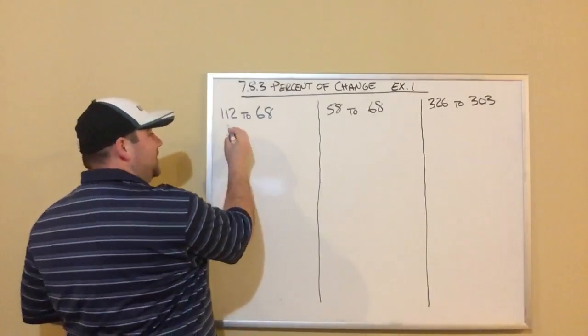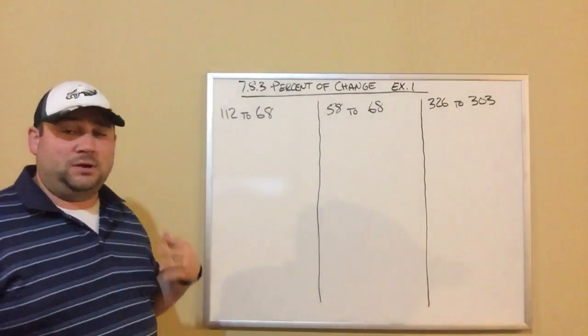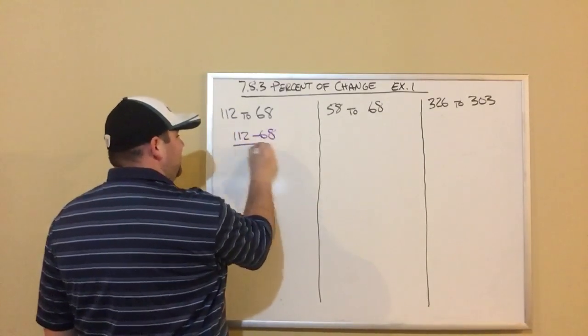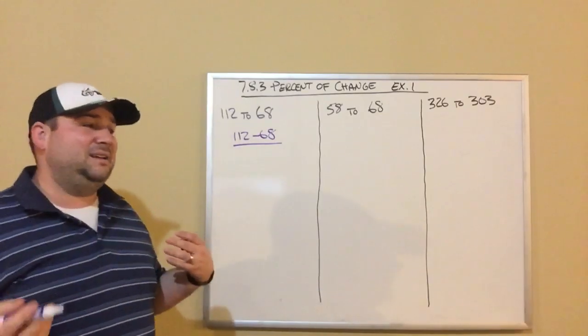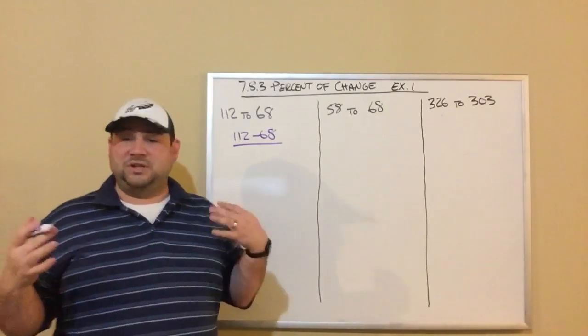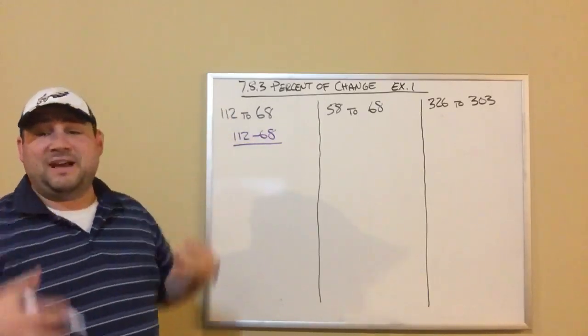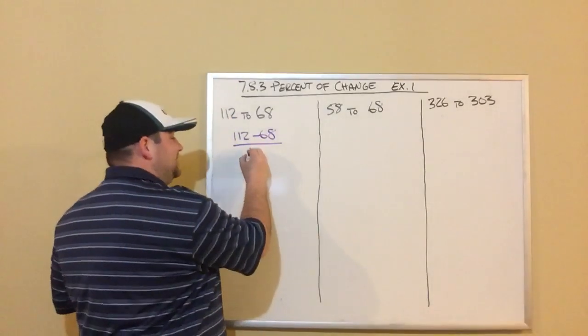So I'm going to take the two numbers. Always just do bigger number minus smaller number. It doesn't matter the order. So I'm going to do 112 minus 68. And then that's always going to be divided by the original number. I look at my original number here was 112. That's what I started with. So that is the original amount.